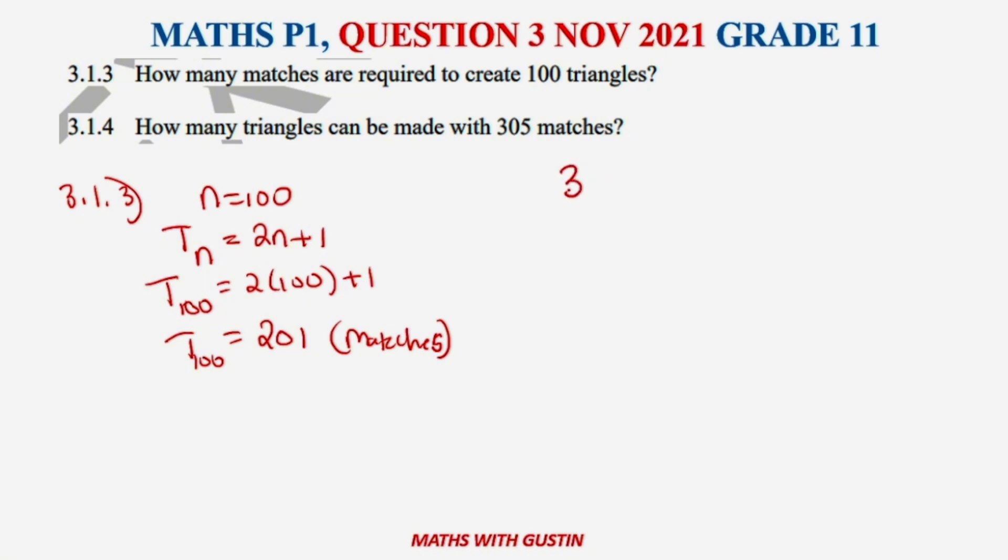Moving right along, 3.1.4: how many triangles can be made with 305 matches? So 305 matches is referring to Tn, so we want to find the value of n. If Tn is 305 and we know that Tn = 2n + 1, we take 1 to that side, so 305 - 1 equals 2n, therefore 304 equals 2n.